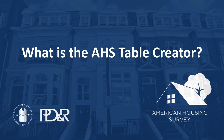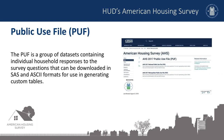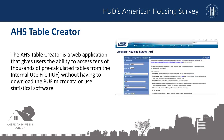The AHS releases data to the public in two formats: the Public Use File (PUF) and the AHS Table Creator. The PUF is a group of datasets containing individual household responses to survey questions that can be downloaded in SAS and ASCII formats. Using the PUF requires a statistical program such as SAS, STATA, or R. Advanced data users use the PUF to make more detailed cross-tabulations. The AHS Table Creator, on the other hand, is a web application giving users the ability to access tens of thousands of pre-calculated tables from the internal use file (IUF), without having to download the PUF microdata or use statistical software.